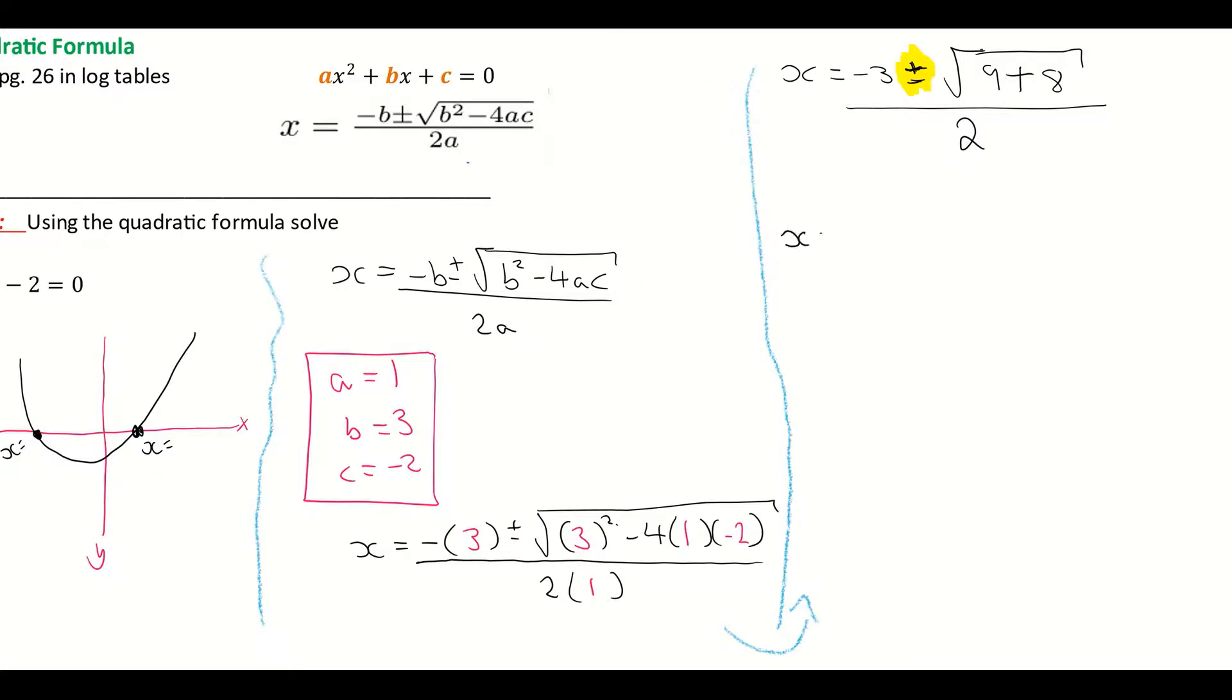So I'm going to go x equals minus 3 plus the square root of 9 plus 8. So I'm going to add them together and I get 17 all over 2. I'm just going to put that plus in a different color so we can focus on it. So that's the plus part of my formula. I'm then going to do it out for the minus part of my formula. So simultaneously down alongside it, I'm going to do x equals minus 3 minus the square root of 17 all over 2. And this is the minus part. So I'm doing them out separately.